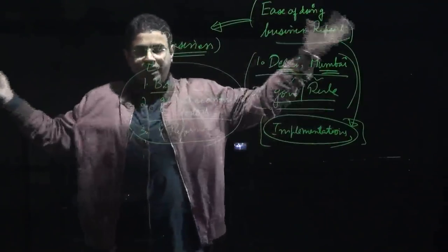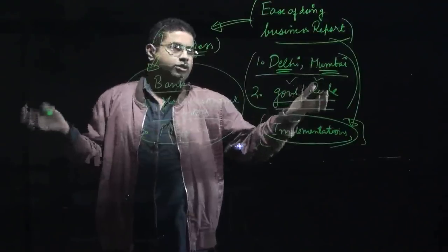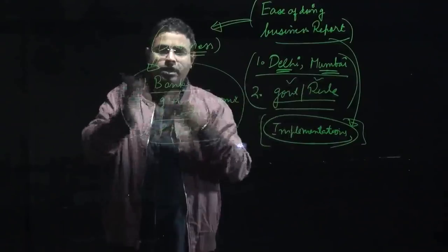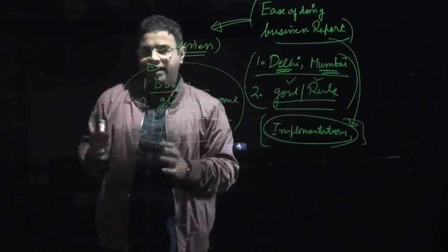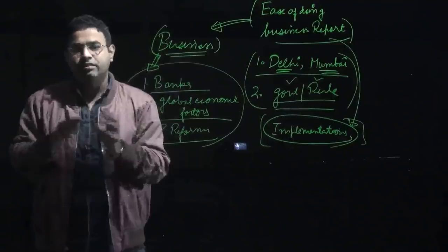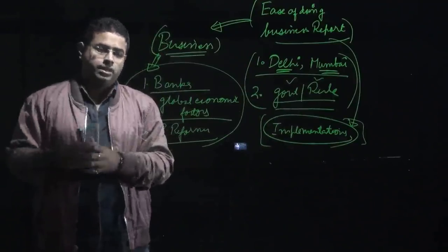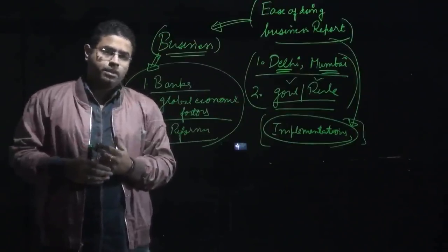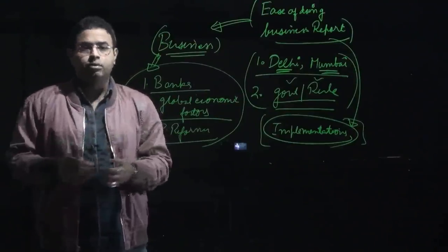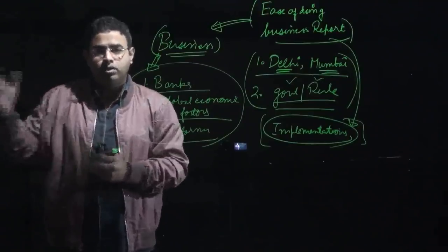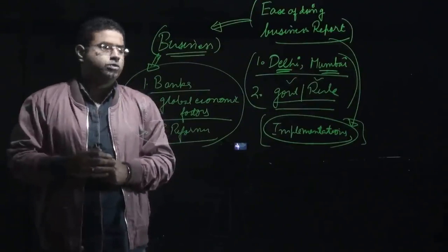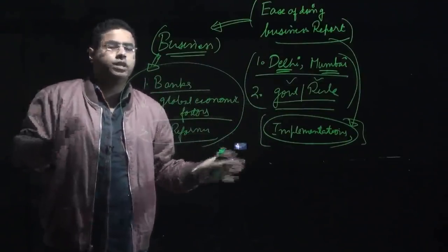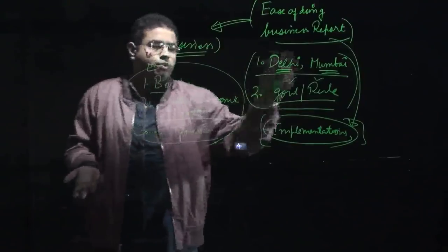We should actually be elaborating, making this ease of doing business report's methodology more holistic. We should actually be including more cities, maybe eight to nine. Earlier, World Bank had promised that it will be increasing the number of cities, but till date we just have only two cities that become the basis of deciding about the ease of doing business report. What about other cities? So this is one report of the World Bank that conveys about what the government is doing, and what the government is doing in only two cities.